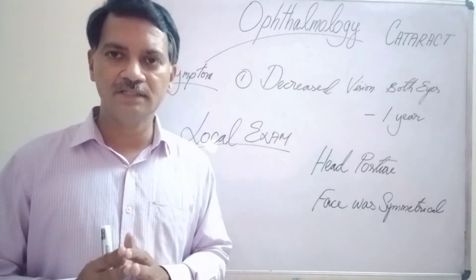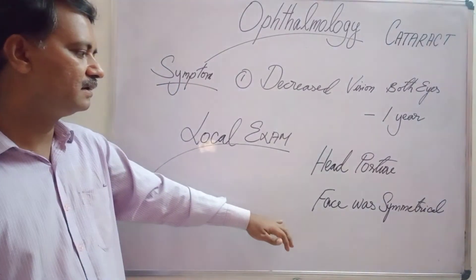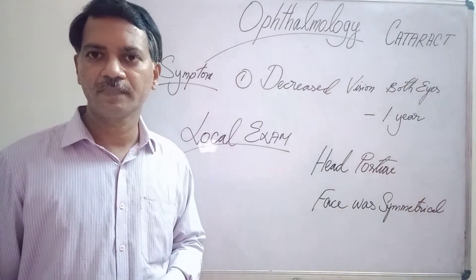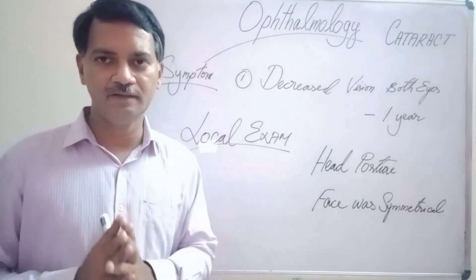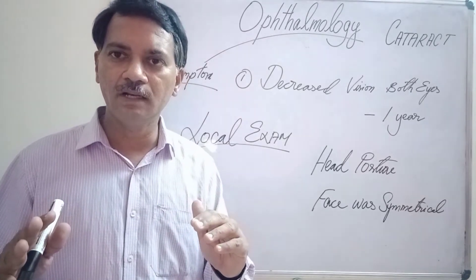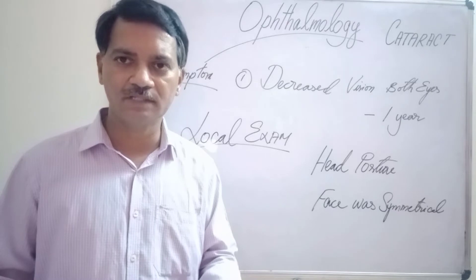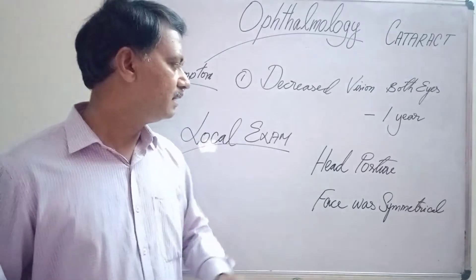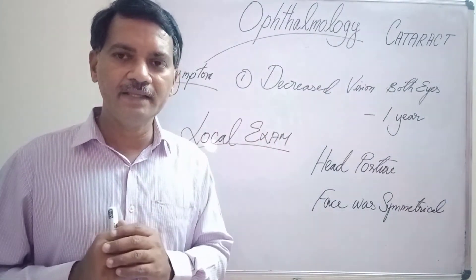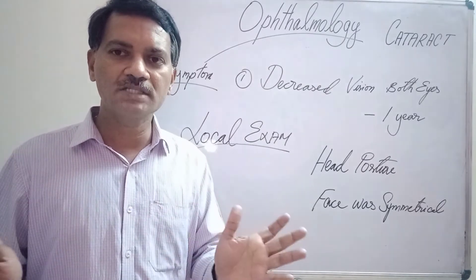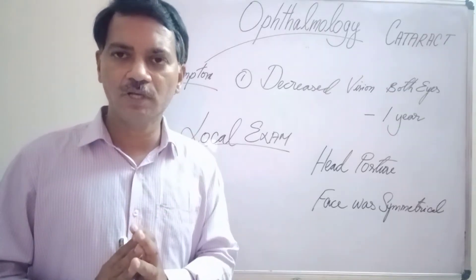After finishing the general examination, I proceeded to the local examination. First, I checked her head posture and whether the face was symmetrical. When I asked her to look straight ahead, there was no abnormal face turn, no abnormal head tilt, no chin elevation or depression — the head posture was normal. Comparing either side of the face, there was no gross abnormality, and her face was symmetrical.